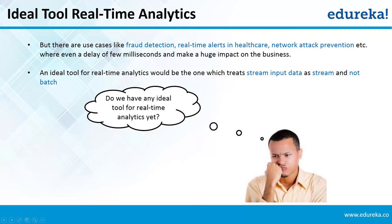It is very evident that the most popular tool for real-time streaming has a limitation — the latency is medium. Hence, there is always a need for a better tool which can give lower latency and higher throughput. There are multiple scenarios like fraud detection, real-time alerts in healthcare, and network attack prevention, where even a delay of a few milliseconds can make a huge impact on the business. An ideal tool should do pure stream processing and not micro-batching.